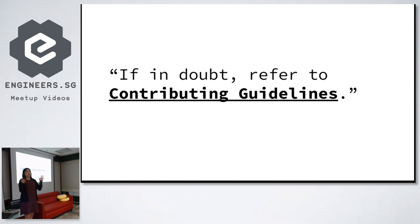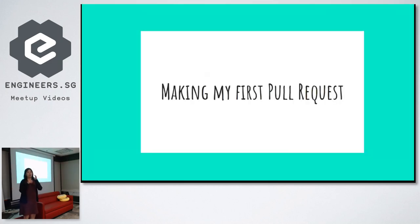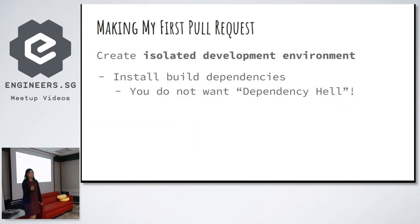If you don't know where to look, refer to the contributing guidelines — each project will have one. Just click on the section you need and all the commands are there. After all those rules, I make my first pull request. Before making the pull request, after cloning the repo, I have to create an isolated development environment.